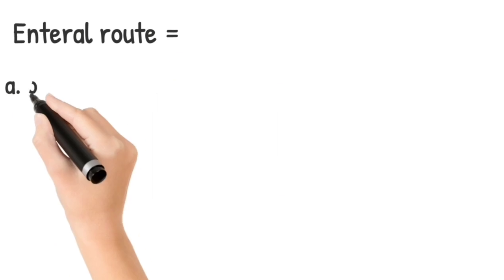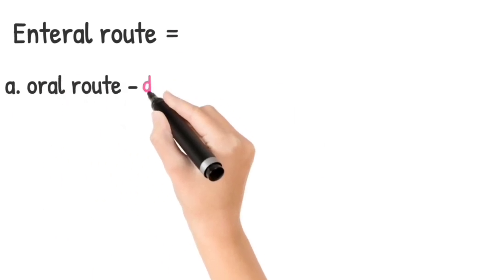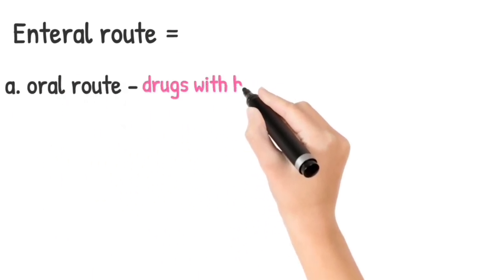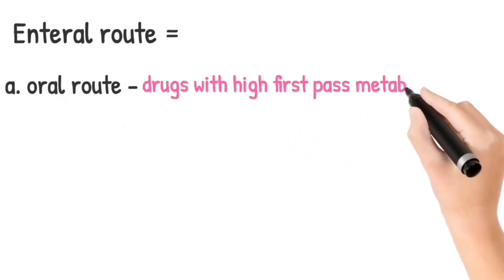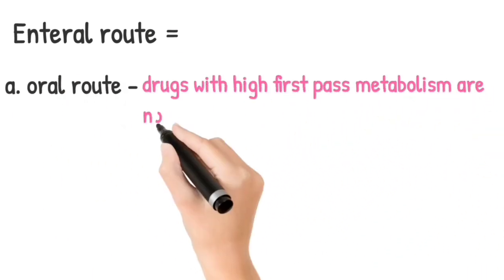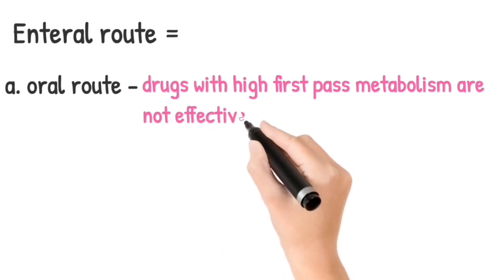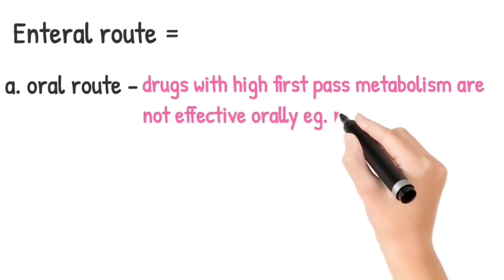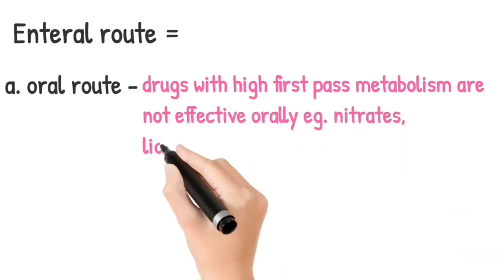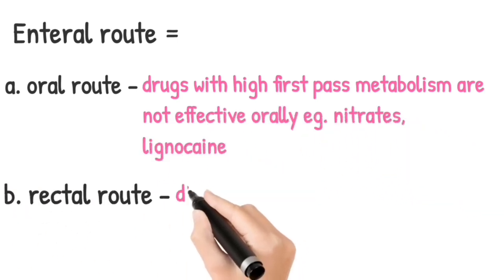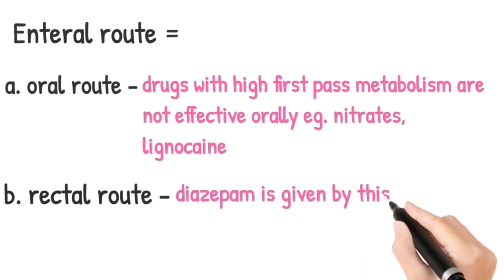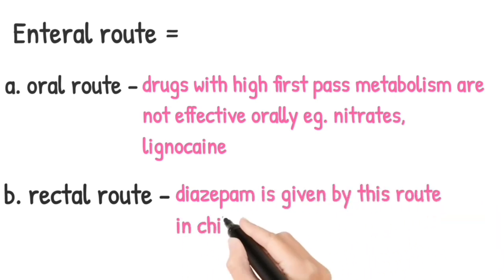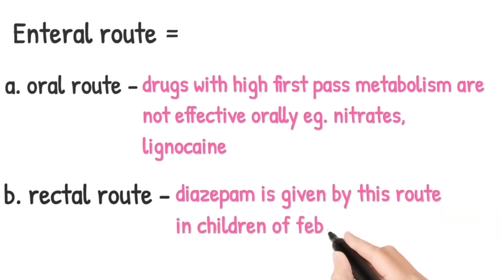Enteral routes. The first one is oral route. In this, drugs with high first-pass metabolism are not effective orally — for example, nitrates and lignocaine. Rectal route: diazepam is given by this route in children with febrile seizures.